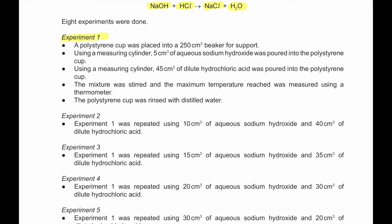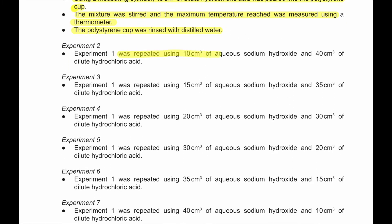Experiment number one: a polystyrene cup was placed into a 250 cm³ beaker for support. Using a measuring cylinder, 5 cm³ of aqueous sodium hydroxide was poured into the polystyrene cup, then 45 cm³ of dilute hydrochloric acid was poured in. The mixture was stirred and the maximum temperature reached was measured using the thermometer. The experiment was repeated with 10 cm³ NaOH and 40 cm³ HCl, then 15 cm³ NaOH and 35 cm³ HCl. If you notice carefully, the total volume is always 50 cm³.